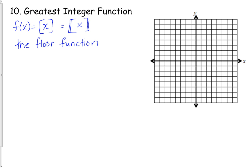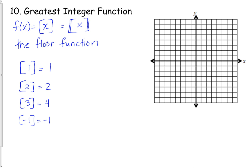What does greatest integer mean? It means: tell me the greatest integer of the number I've given you. The greatest integer of 1 is just 1. The greatest integer of 2 is 2, and of 3 is 3. Going in the negative direction, the greatest integer of negative 1 is negative 1. If I put these points on a graph, it's just a series of solid dots on the points for the line y equals x.